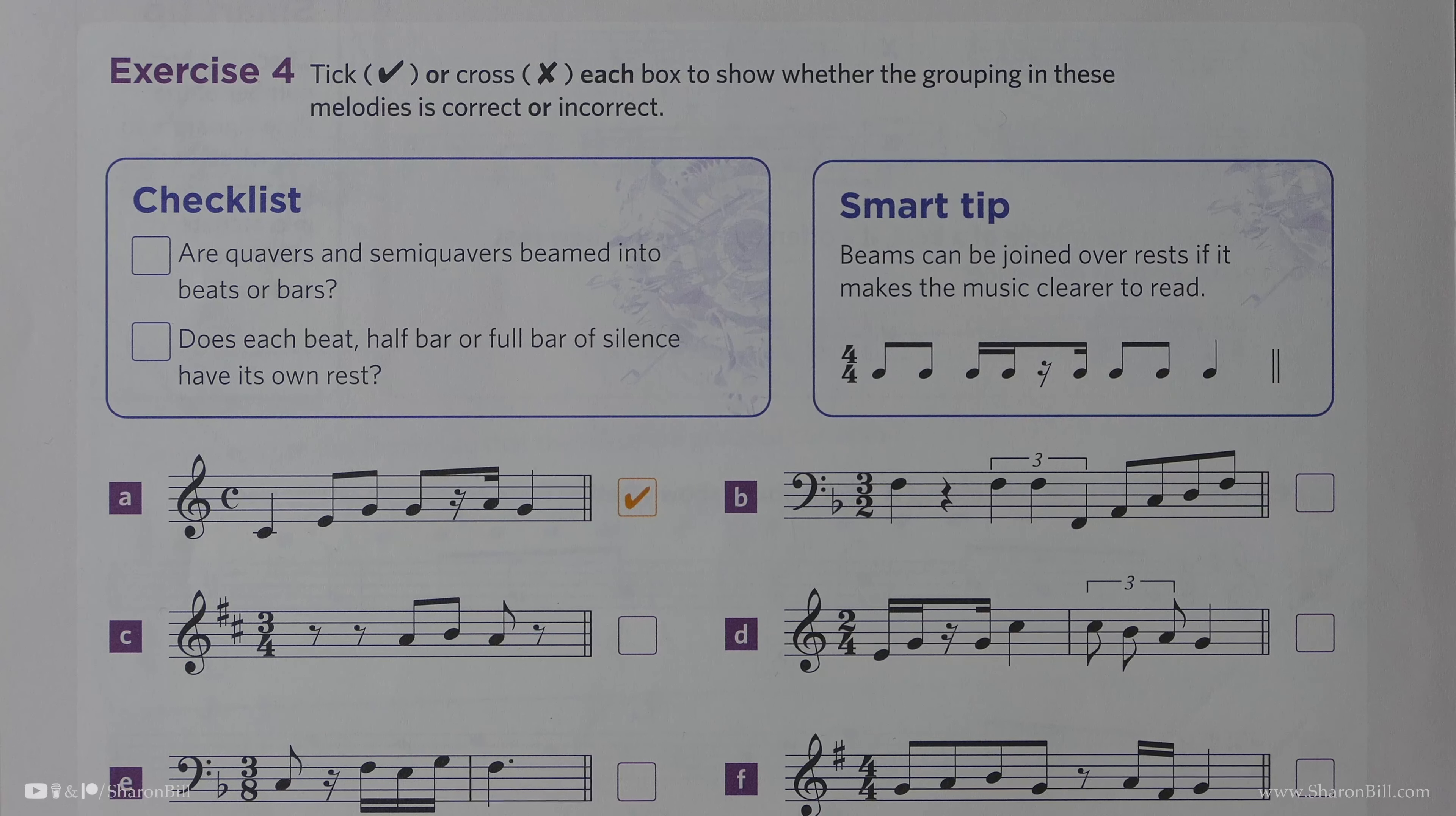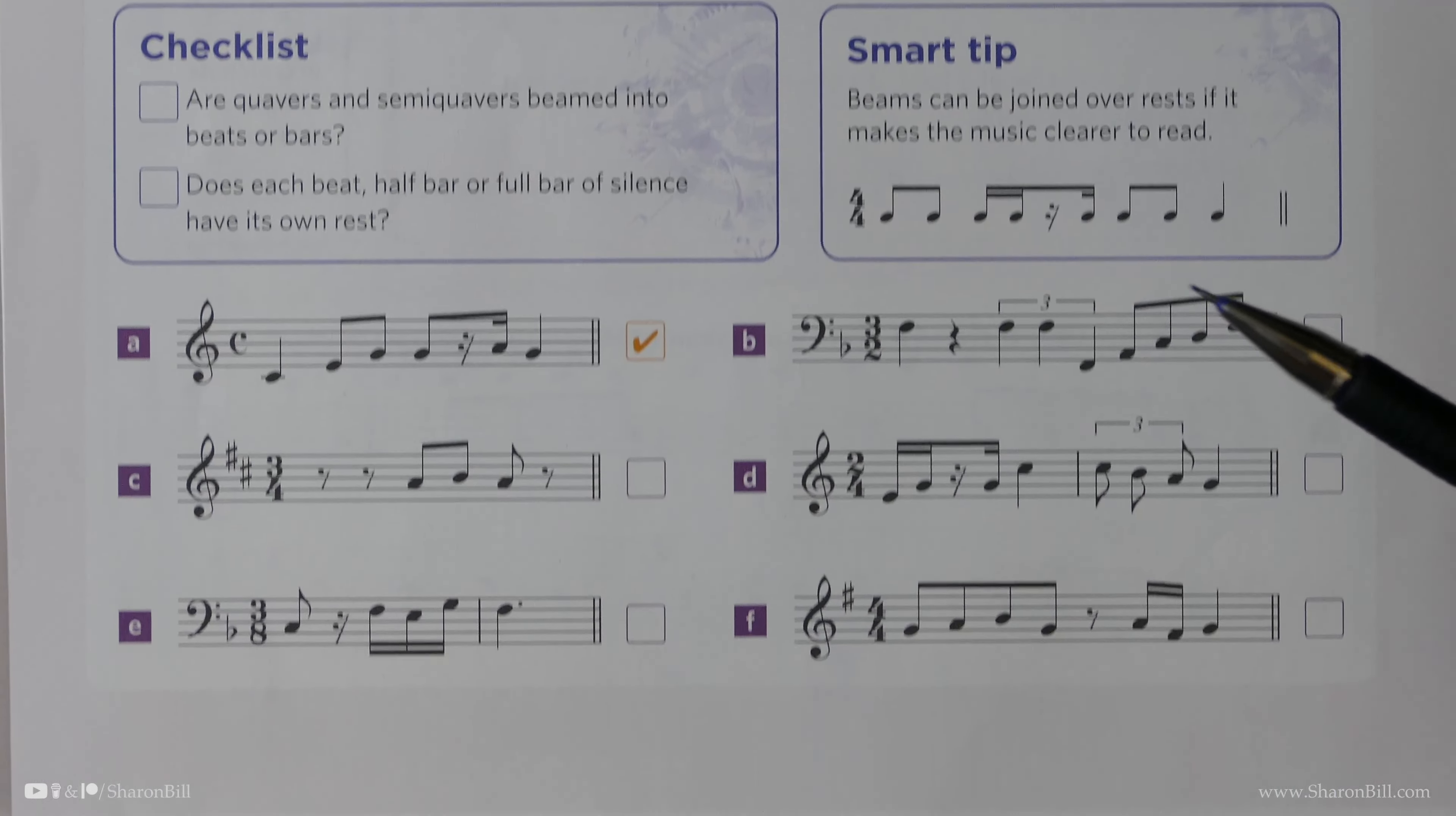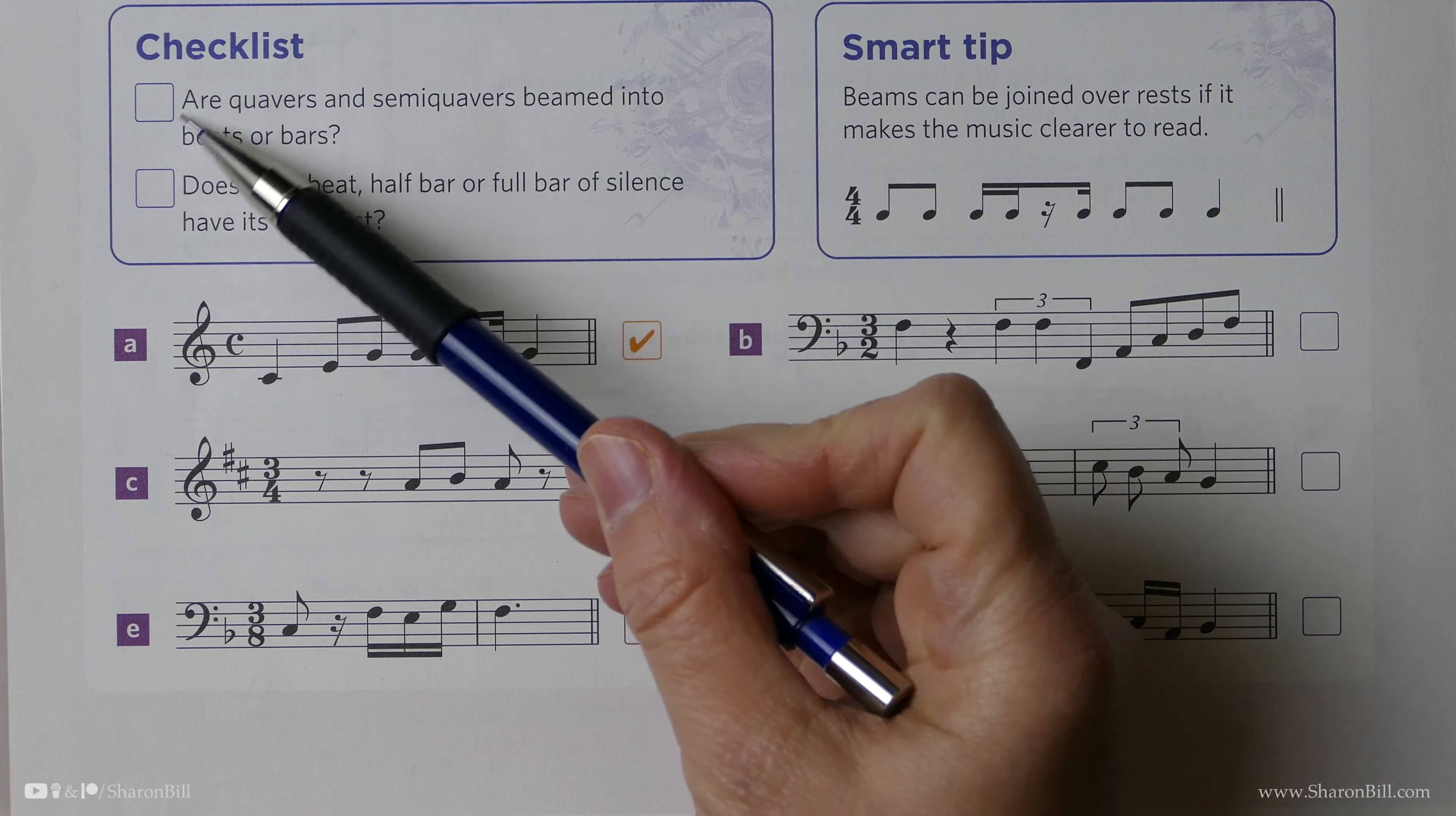Let's now complete page 22 of the Grade 2 Discovering Music Theory Workbook. We're going to move on and look at exercise 4, where we need to show whether each of these examples are grouped correctly or not. The things to be looking out for are: are we beaming quavers and semiquavers into each beat?